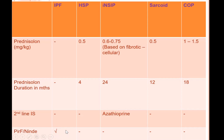Once UIP is diagnosed on CT, there is no need for a surgical lung biopsy. So once the IPF or UIP pattern is picked up on CT we can avoid surgical lung biopsies. Overall, the prognosis in UIP or IPF pattern is very poor compared to other interstitial lung diseases — the 5-year survival rate is very poor. So if UIP or IPF is picked up in earlier stages, the prognosis can be explained to the patient.